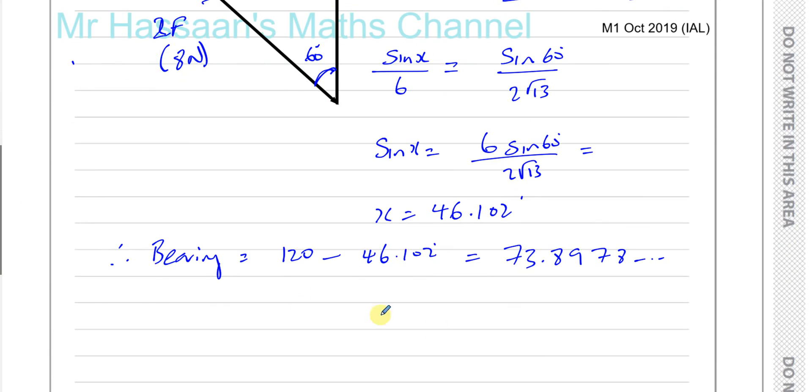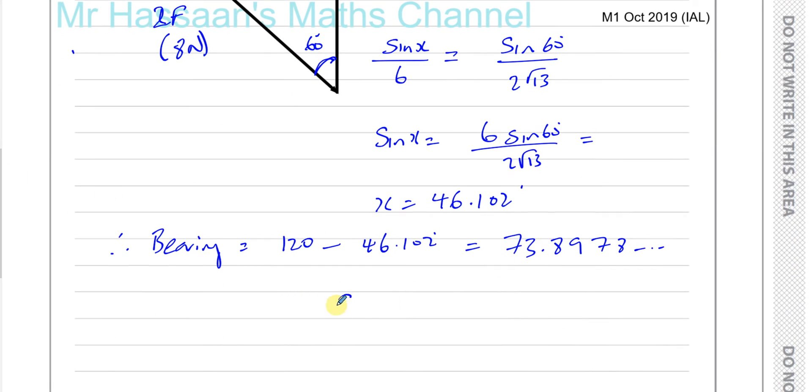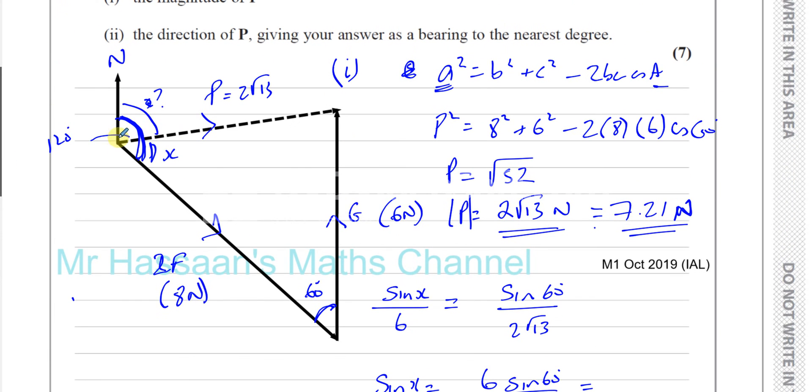So therefore, we can say that the answer, remember, bearing should always be written to, well, they told us here to write it to the nearest degree, which is what you normally do anyway, but you should always write it with three figures. So it's 0, 7, 4 degrees, that's the bearing, that's the answer. Okay, 0, 7, 4, three figure, and to the nearest degree. Bearing always measured from the north line in the clockwise direction. So there's the answer, there's the magnitude.